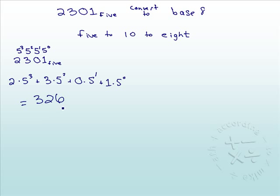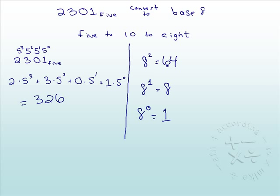All right, and now we're going to take our 326 and change it to base 8. So remember, to go to a different base from base 10, this is where we divide. So we first find our powers of 8: 8 to the zero is 1, 8 to the first is 8, 8 squared is 64, and 8 cubed is 512.